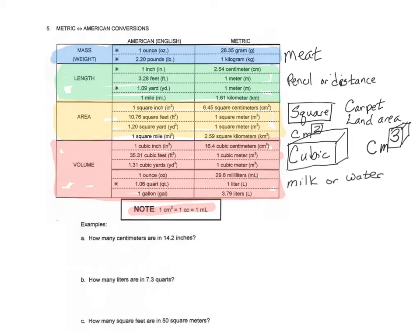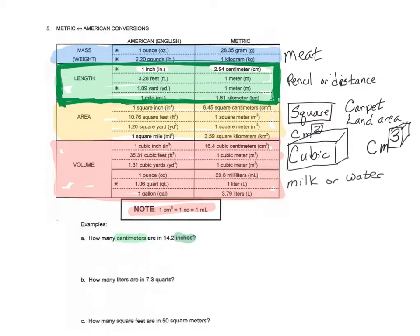Once we've determined the section we're going to look at, the next step is to make a ratio out of whatever your question involves. In letter A, we have centimeters and inches, which tells us we're in the region of length. So we'll focus on the length section and look for the conversion that has both centimeters and inches — we see that one inch equals 2.54 centimeters.